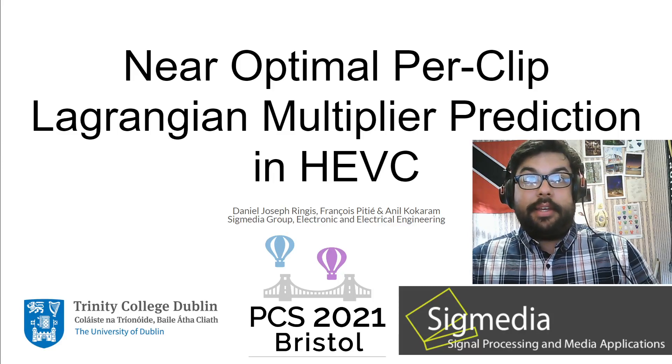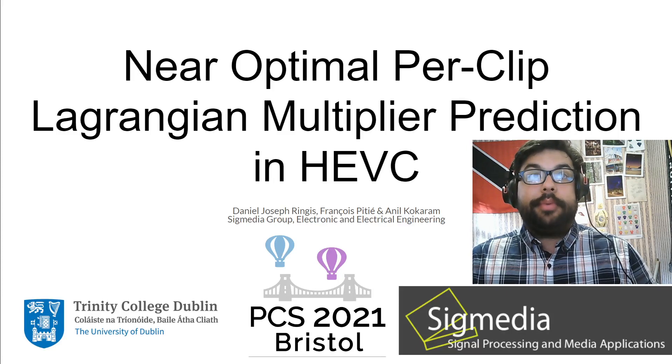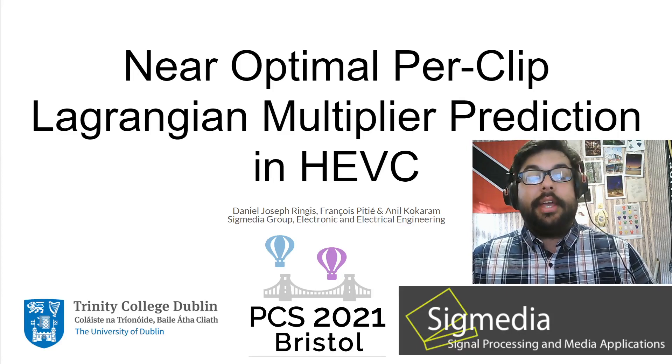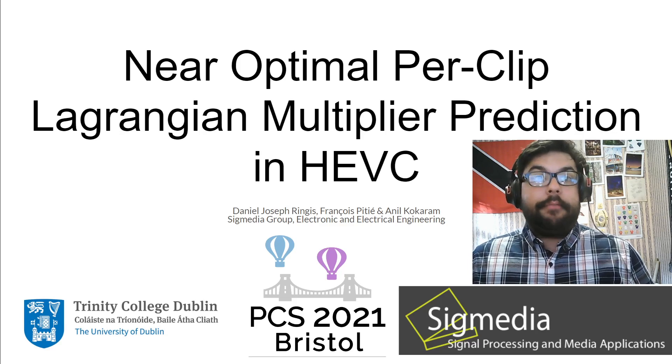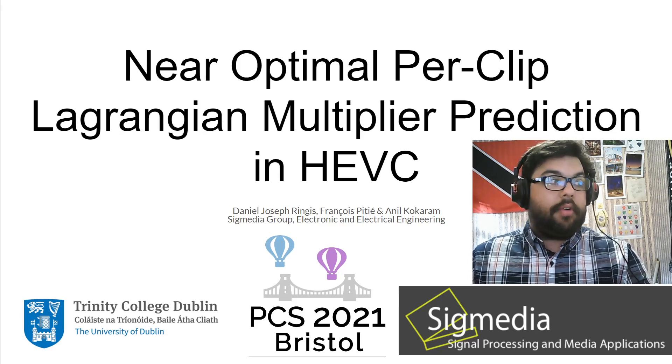Hello, my name is Daniel Joseph Ringis and I'm here to present near-optimal per-clip Lagrangian multiplier prediction in HEBC. I'm from Trinity College Dublin, a part of the SIG Media Group, along with my co-authors Francois Petit and Al Kokoram.